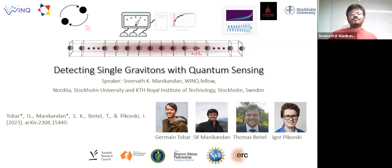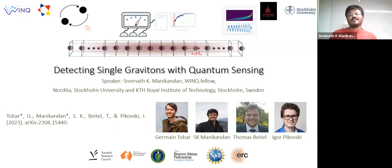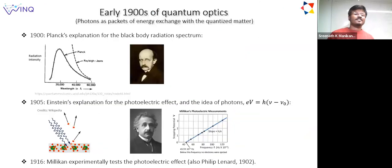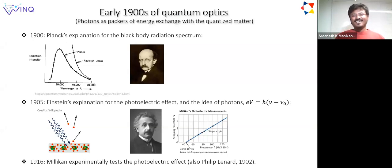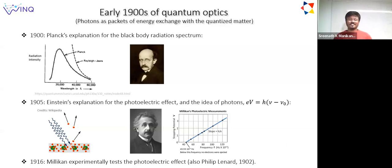The idea here is to detect, basically potentially infer the existence or exchange of single gravitons with matter in a potentially tabletop kind of experiment. I want to start with this idea that it would be helpful to have the early 1900s mindset of quantum optics when we go further.